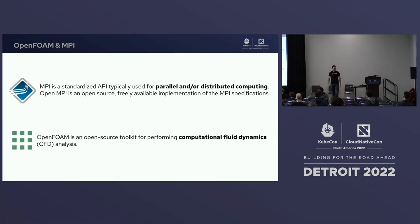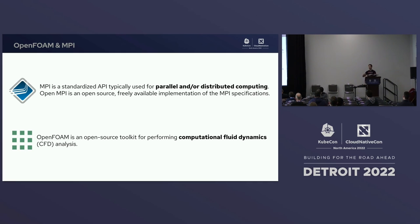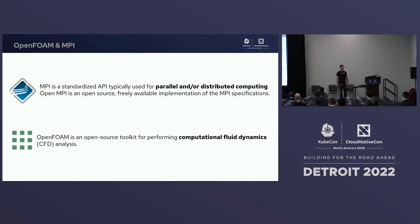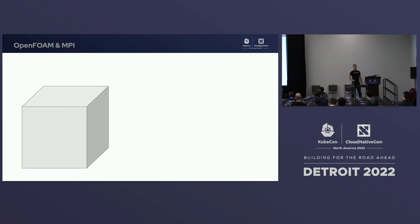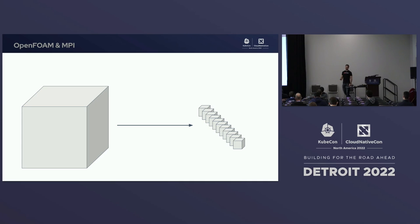So let's review OpenFoam and MPI. What is MPI? It does parallel or distributed computing — lots of things done in parallel. OpenFoam is for computational fluid dynamics. Air is a fluid, water is a fluid; it can analyze how fluid flows around objects. We have this big job and we want to break it into little jobs — that's where MPI comes in.